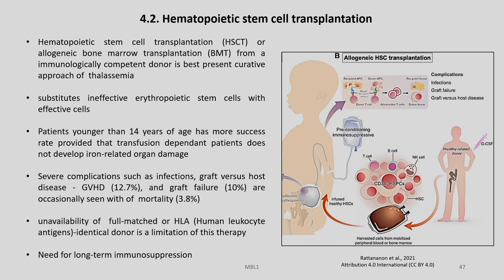Hematopoietic stem cell transplantation is another approach. Allogeneic bone marrow transplantation from an immunologically compatible donor is the best present curative approach for thalassemia, substituting ineffective erythropoietic stem cells with effective cells. Patients younger than 14 years of age have more success, provided the transfusion-dependent patient does not develop iron chelation-related organ damage.